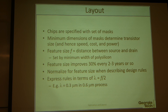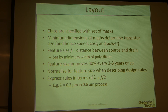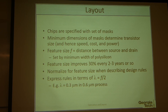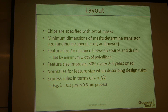Up to this point, we've gone through the transistor fabrication process. There is also a design point we didn't go through. As I mentioned, we need mask sets — a layout for chip making. The minimum dimension of the mask determines how small the transistor will become. If the transistor size is smaller, the speed will be faster, more cost effective, and more power efficient. There is a reference value for design called feature size F, which is the distance between the source and drain — the gate length. This feature size improves 30% every two to three years or so.